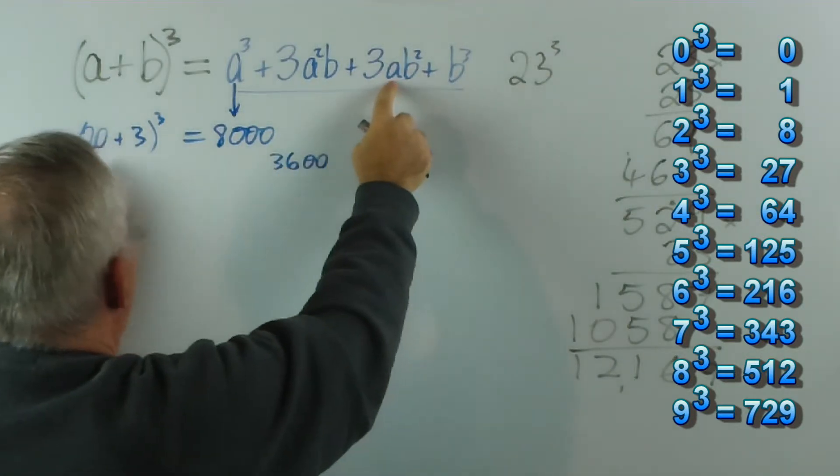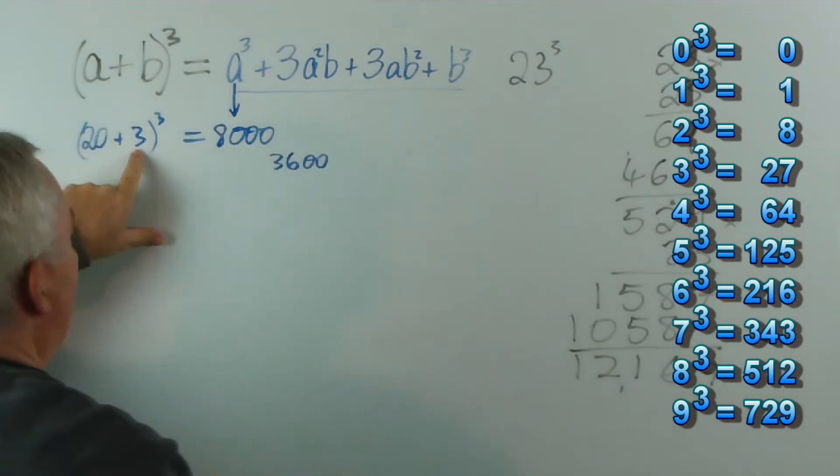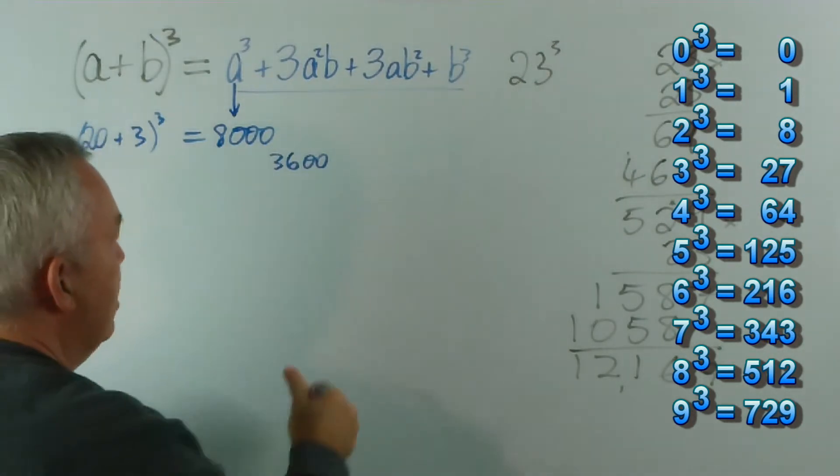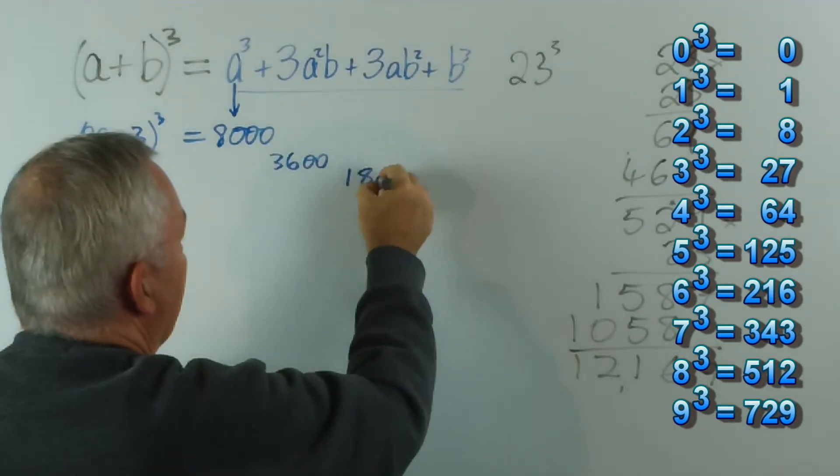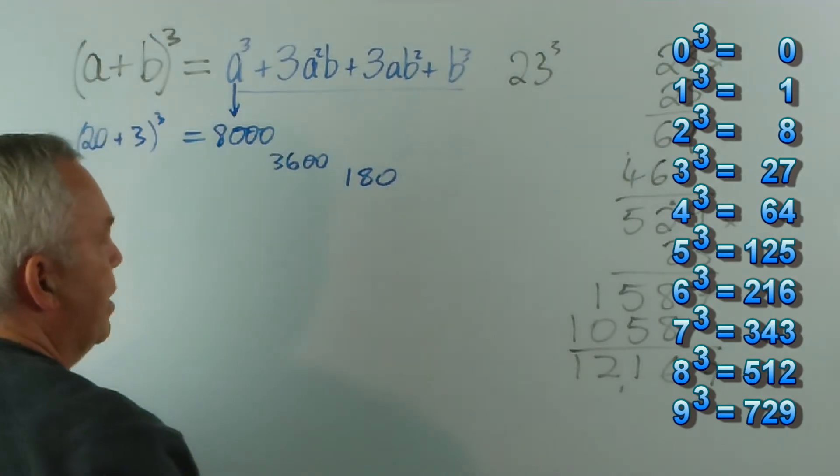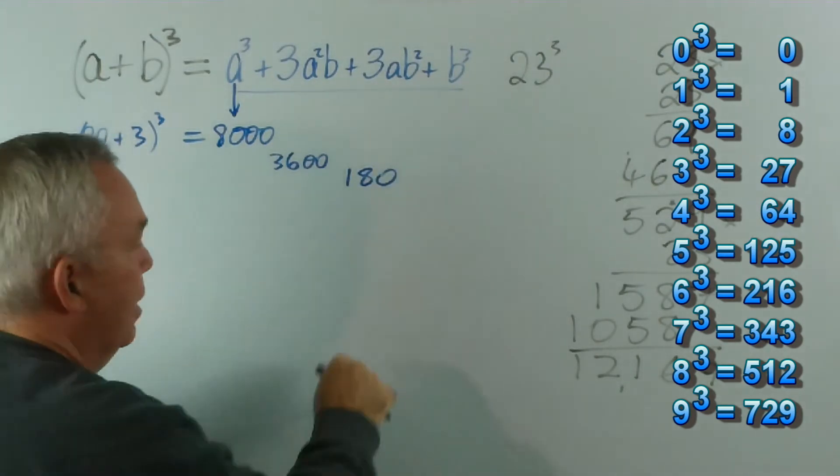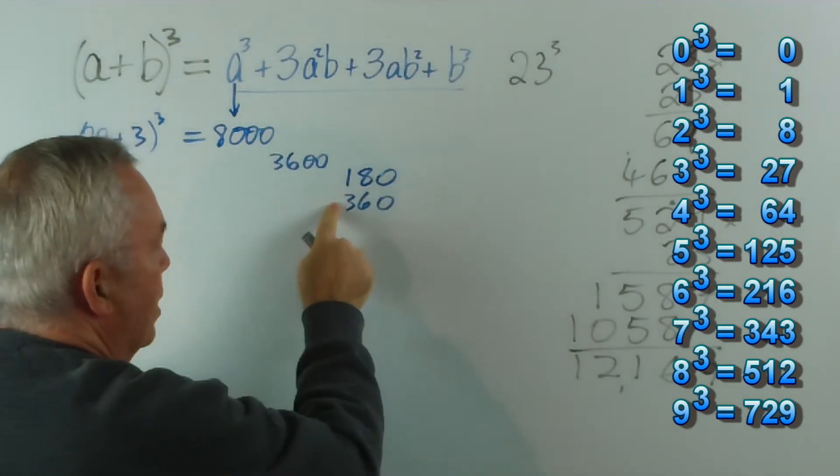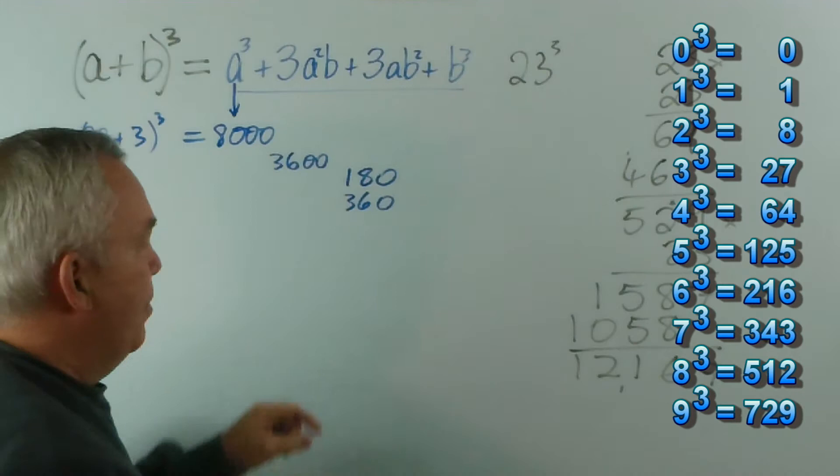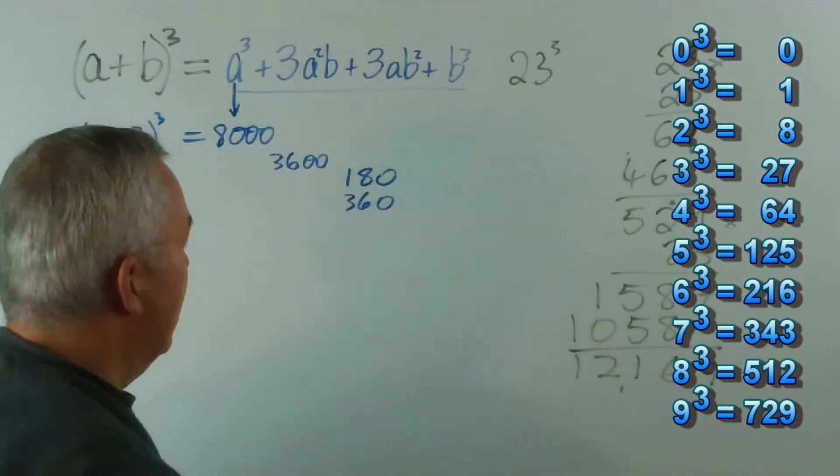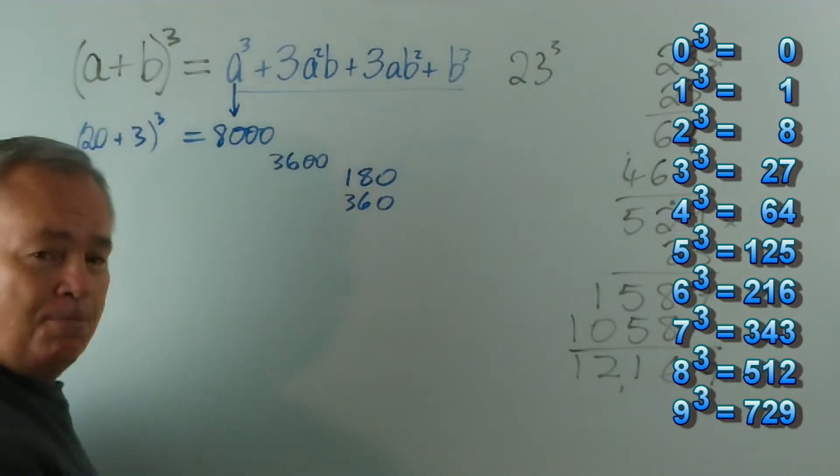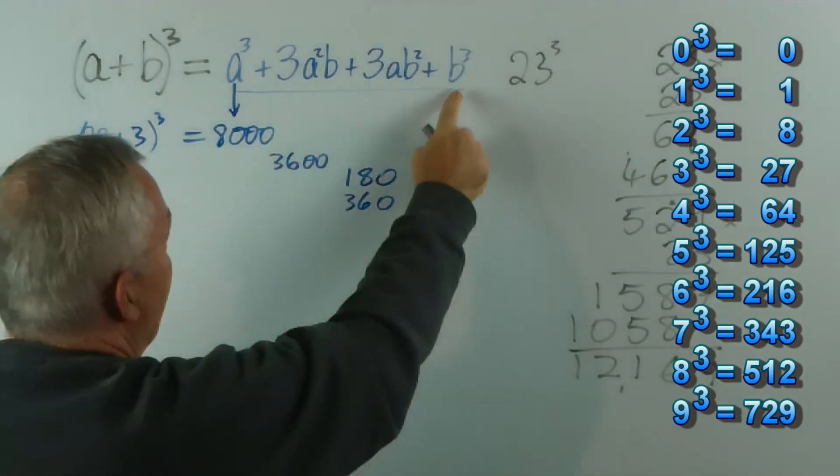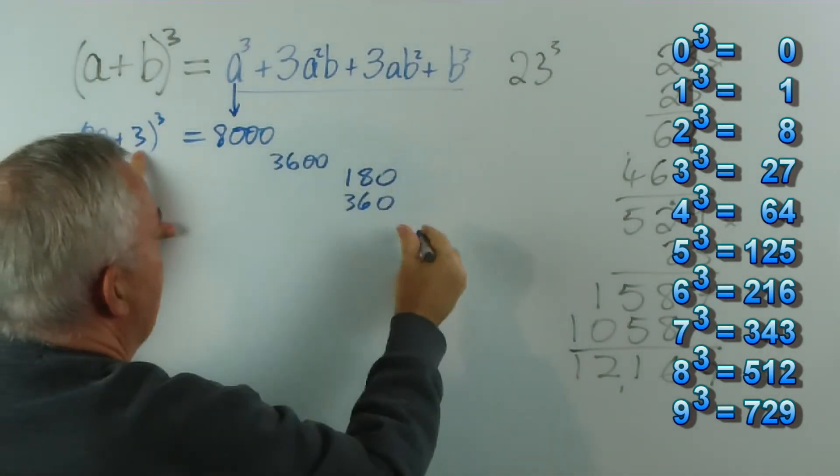This one here, we've got a times b squared. Now, b squared, 3 squared is 9, times 20 is 180. And 3 times that is a bit hard. So, we can write the 180 down. And then, to make sure we've got three of them, we just double the 180, 360. So, we've got one of them there and another two of them there makes the 3. And writing it in two steps makes it a bit easier than having to multiply by 3 in your head. That's if it's too difficult. b cubed, 3 cubed is 27.